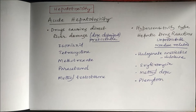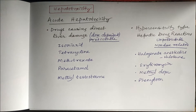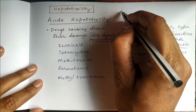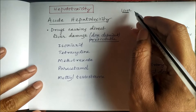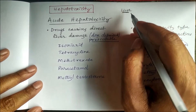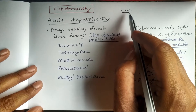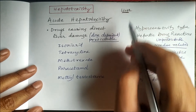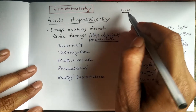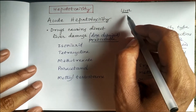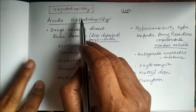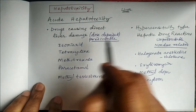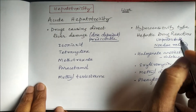Namaskar. Today we will study hepatotoxicity. The drugs which are toxic to liver are called hepatotoxic drugs. Liver is the site of metabolism — the significance of metabolism is it makes a lipid soluble drug water soluble so that it becomes eligible for excretion by the renal route. Liver is the main site where this biotransformation occurs, and many drugs and their metabolites cause damage to the liver directly or through hypersensitivity type reactions.